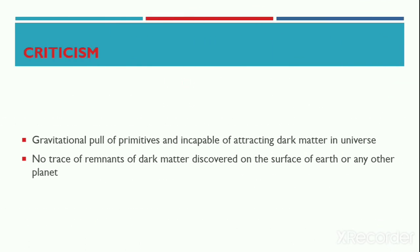Now let's critically evaluate the hypothesis. Schmidt's hypothesis was able to explain many loopholes in the earlier hypotheses proposed by other major scientists. But still there are two major criticisms. First, many scientists stated that the gravitational pull of the primitive Sun was incapable of attracting the dark matter in the universe. Second, till now there are no traces or remnants of dark matter discovered on the surface of the Earth or any other planet. So how could Schmidt have proposed that the planets were formed from this dark matter?